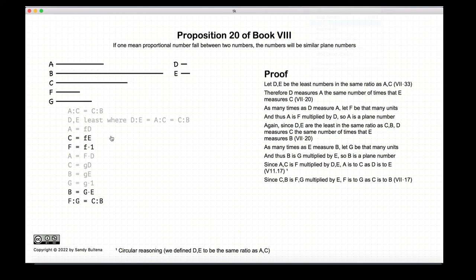So what we have here is we have C is equal to F of E and B is equal to G times E. So if we remove the E, we can see that the ratio of C to B is equal to the ratio of F to G. So the ratio of F to G is equal to the ratio of C to B.